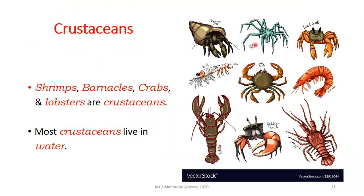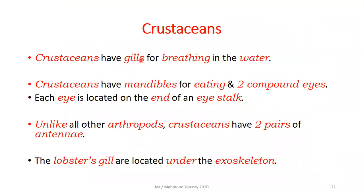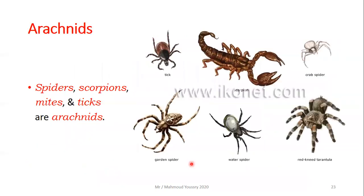The second type of arthropods is crustaceans — crabs, lobsters, shrimp, and barnacles. They mostly live in water and have gills for breathing. Crustaceans have mandibles for eating and two compound eyes, each on the end of an eyestalk. Unlike other arthropods, crustaceans have two pairs of antennae, and their gills are located under the exoskeleton.